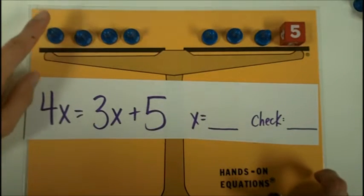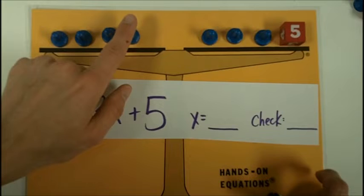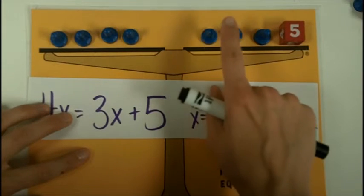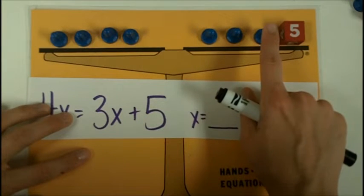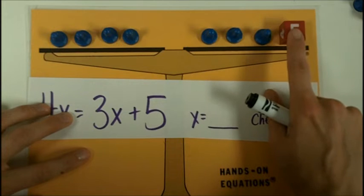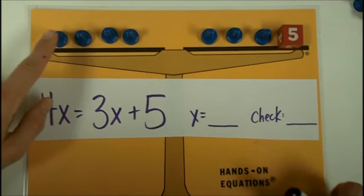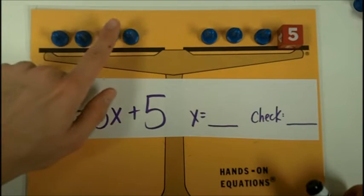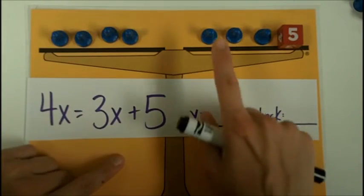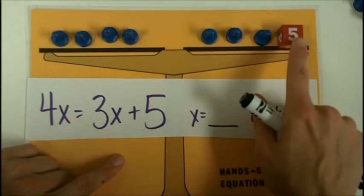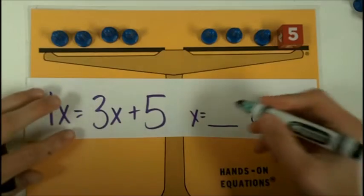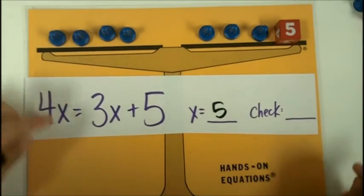Let's try four. Four, eight, twelve, sixteen. Four, eight, twelve, plus five is going to be seventeen. Let's try fives. Five, ten, fifteen, twenty. Five, ten, fifteen, twenty. Oh, it works. So the pawn or the x equals five.